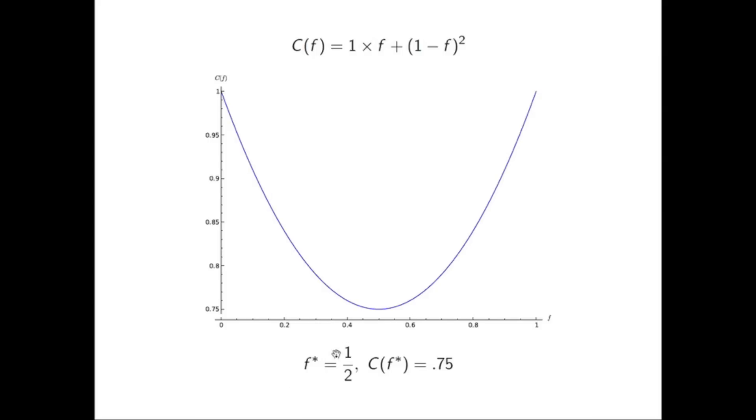So, that means that this optimal flow, we're going to denote that by F star, is when half the traffic goes along the bottom arc and half the traffic along the top arc. And then the cost, so the best possible cost, is 45 minutes. And that's because half the traffic is getting half an hour and the other half is getting an hour. So, the average is 45 minutes.